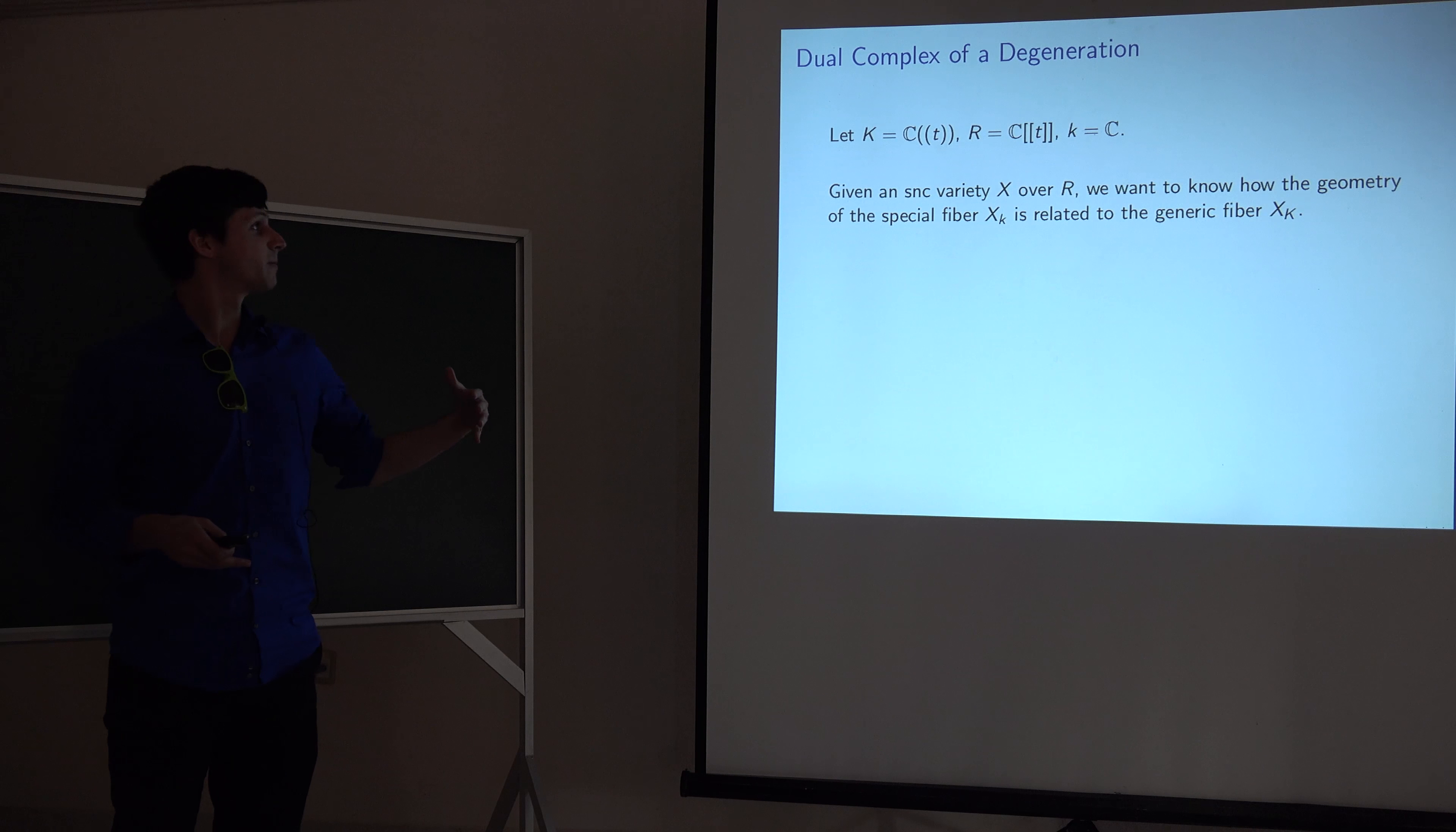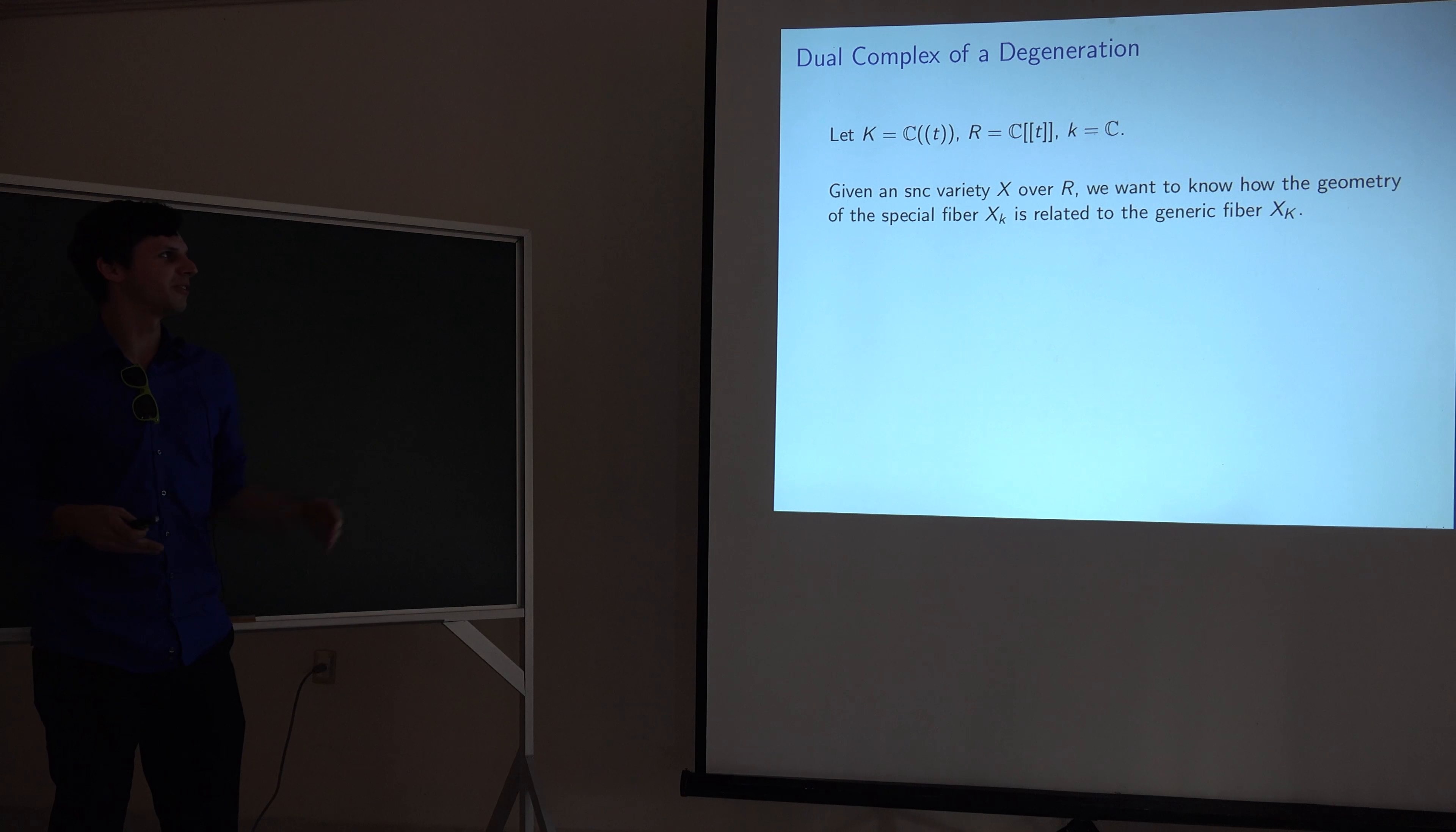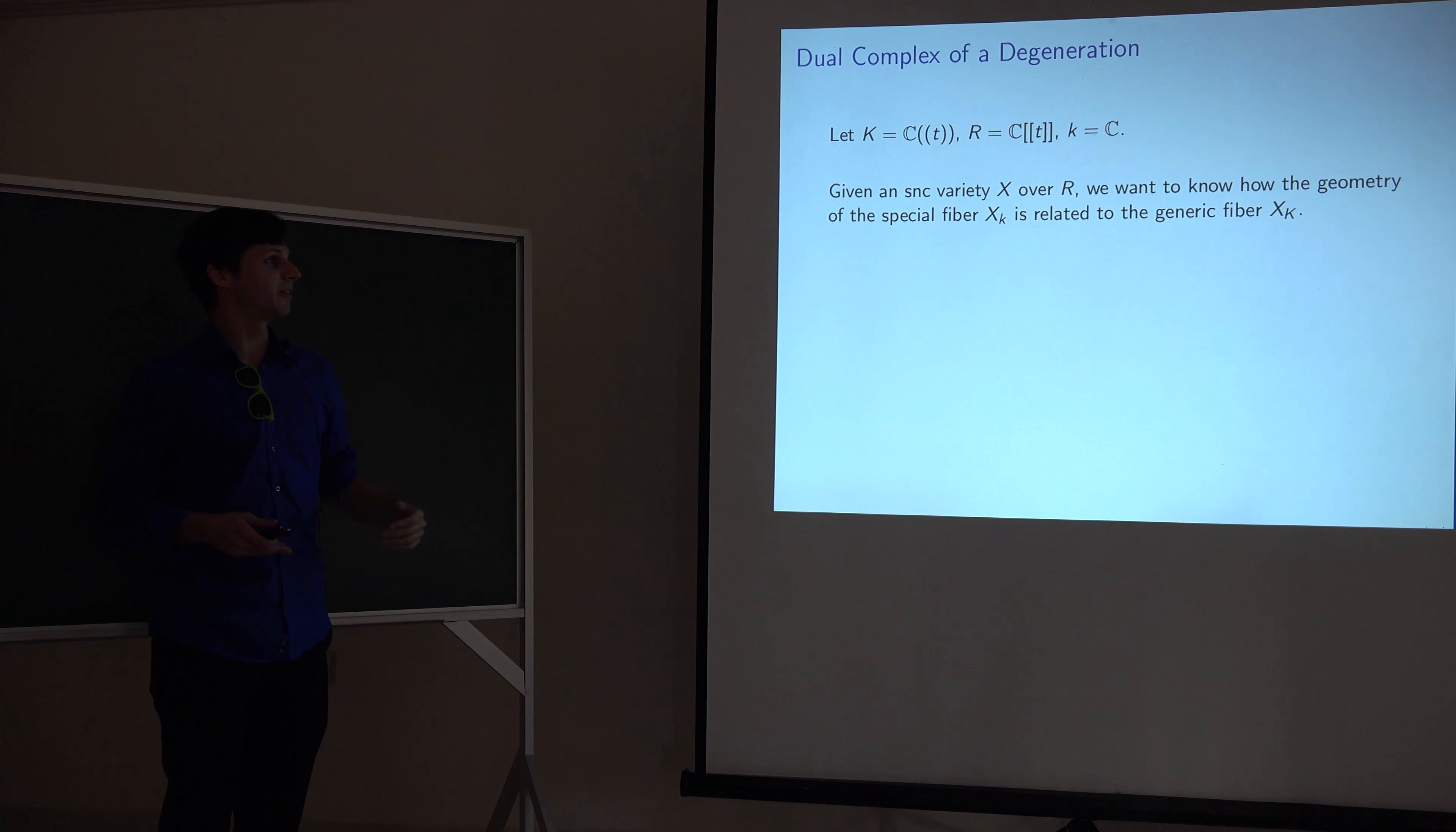So the generic fiber is going to be some smooth variety. But then we may not be able to extend that to a variety which is smooth over R. But once you have resolution of singularities, you can at least make something where you get a model that's regular and where the special fiber has strict normal crossings. So we could call that an SNC variety over R. And so in that case, what we have is the special fiber is something with a lot of components. And so we want to understand what the geometry of that fiber looks like compared to geometry of generic fiber.